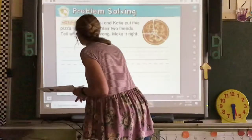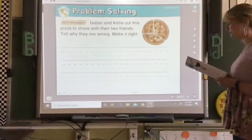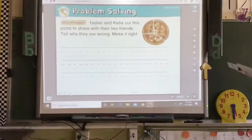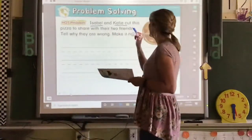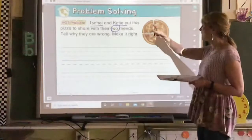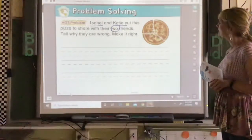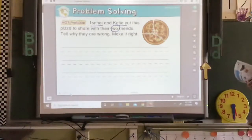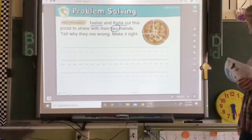And then our last problem. Make sure this is the same. It says, Isabel and Katie cut this pizza to share with their two friends. Tell why they are wrong. First of all, you have Isabel and Katie and then two more friends. How many friends is that all together? And how many pieces of pizza do they have? How can you make that right? Is there a piece there that you could divide more? Why don't you show me how to make that pizza? Divide it again to show me enough pieces for Isabel, Katie, and two friends.